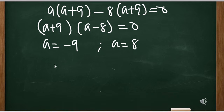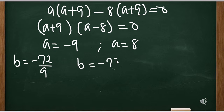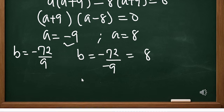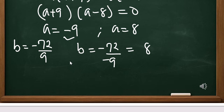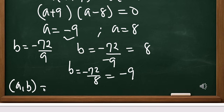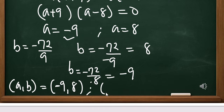Now, recalling that B equals negative 72 over A from equation 5: for case 1, B equals negative 72 over negative 9, which gives B equals 8. For case 2, B equals negative 72 over 8, which gives B equals negative 9. So the two solution pairs for A comma B are: when A is negative 9, B is 8; and when A is 8, B is negative 9.